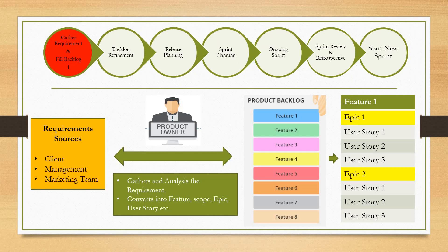Hello friends, if you want to know the Scrum process in software development then you are watching the right video. The first phase is requirement gathering and filling the backlog. The product owner gathers requirements from requirement sources — which could be a client, a management team, or a marketing team — and then converts those requirements into understandable formats like features, scope, epics, and user stories, and fills them in the backlog.